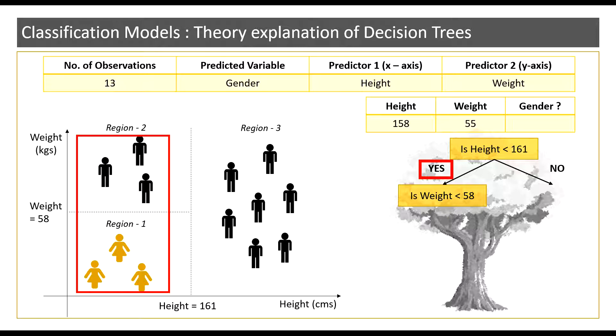Here I again ask another question: is the weight of the given observation less than 58 kgs? The answer again is either a yes or a no. In this case the answer is a yes again because this observation has a weight of 55 kgs and 55 kgs is obviously lower than the threshold value 58 kgs. Hence this points to the observations in region 1.